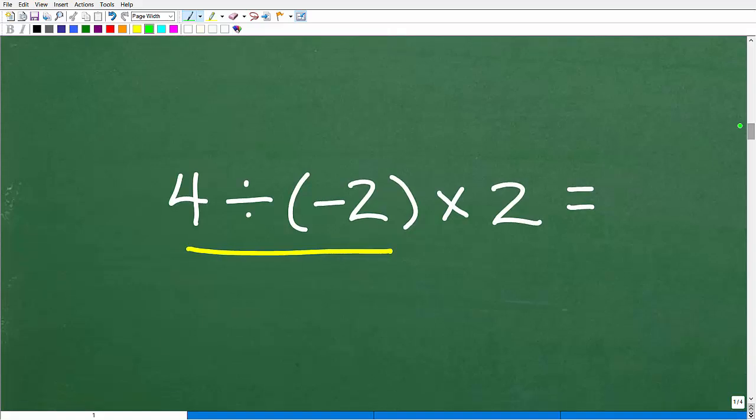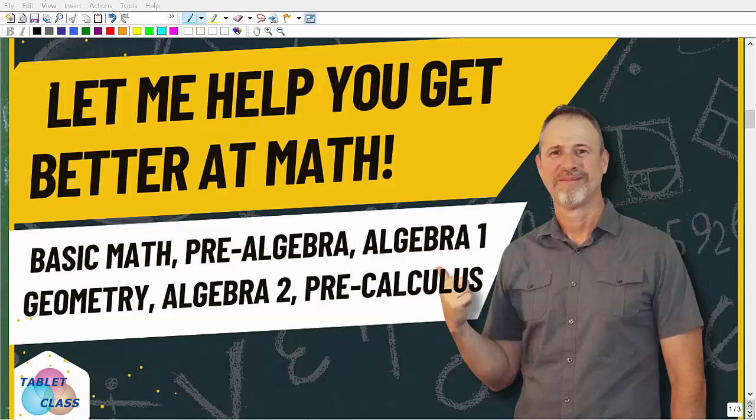So here, we're going to be doing division, right? Because we just talked about that. This is what we see first from left to right. So four divided by negative two, we're going to get that answer, then multiply by two. Now, before we continue on, if you want to get better at math, you definitely can.